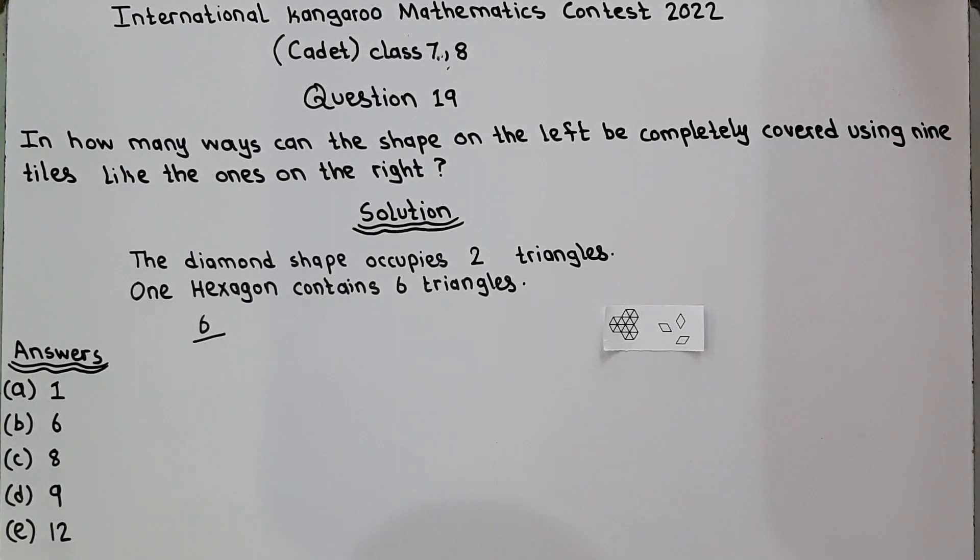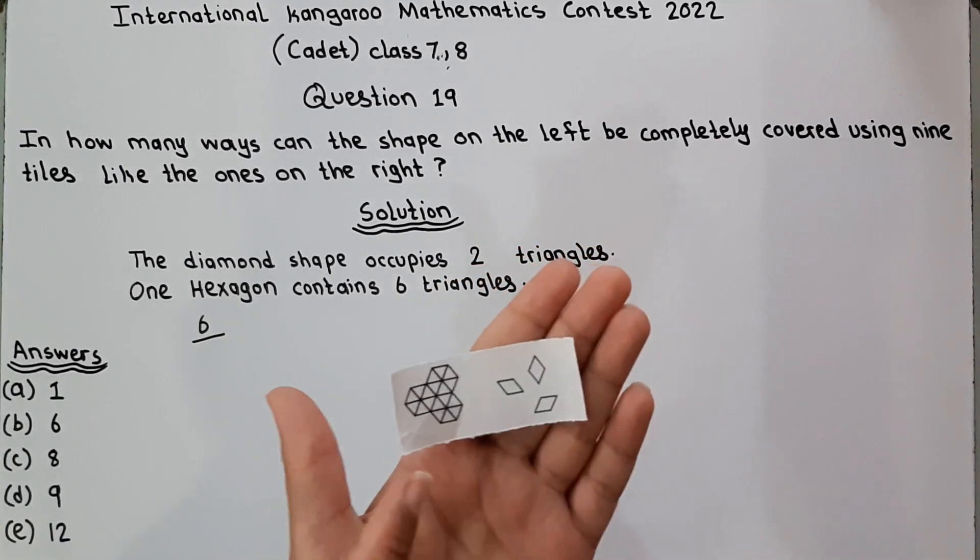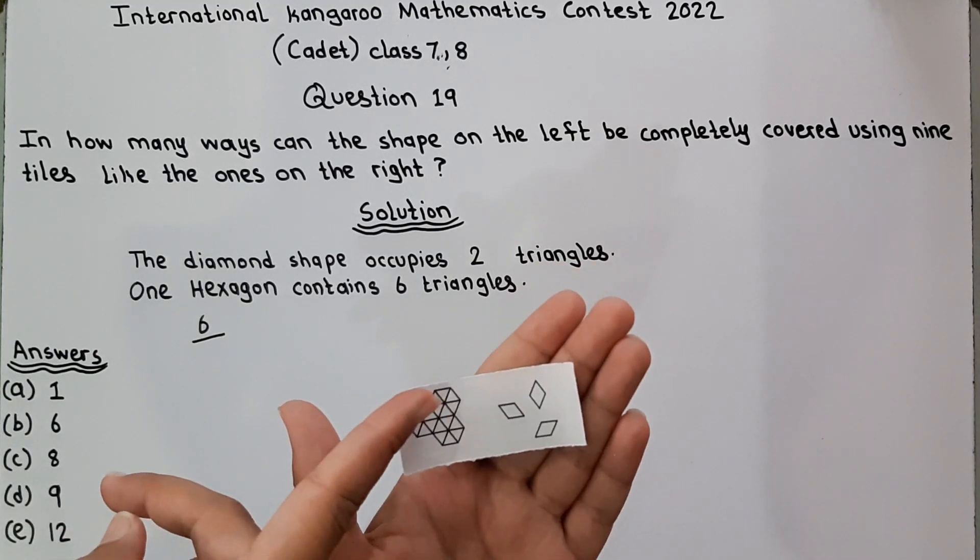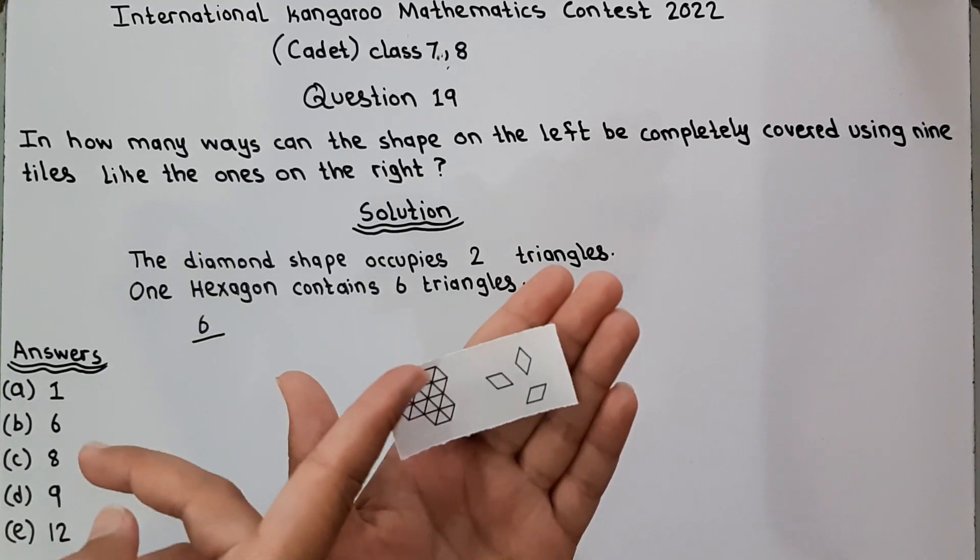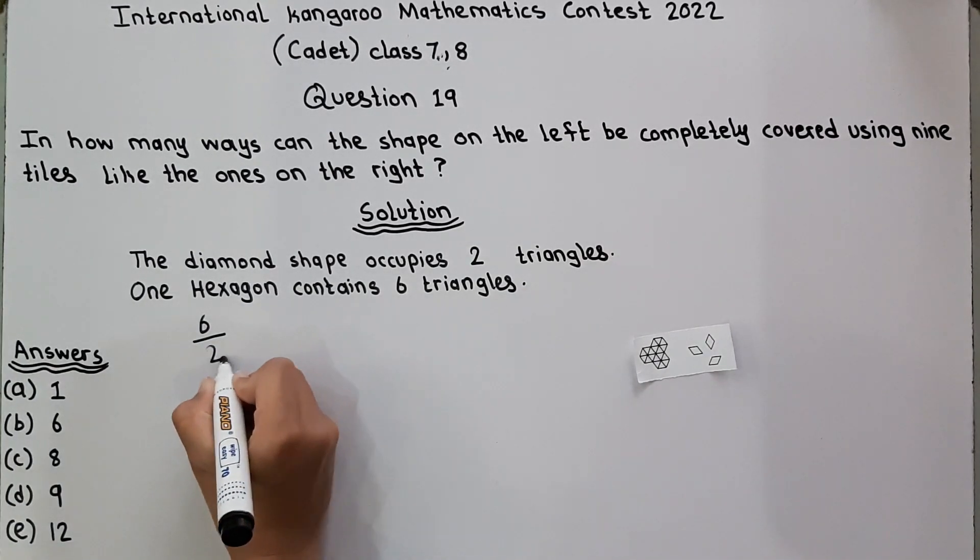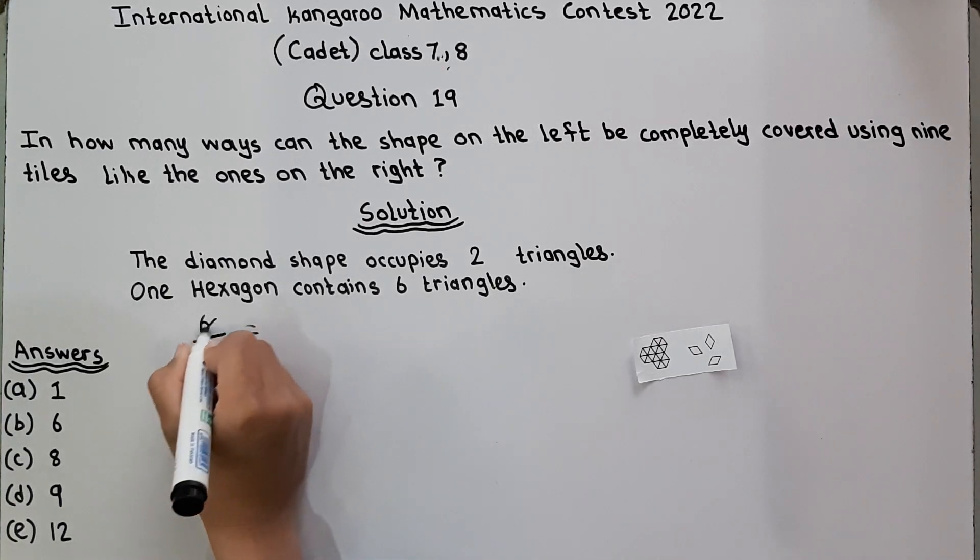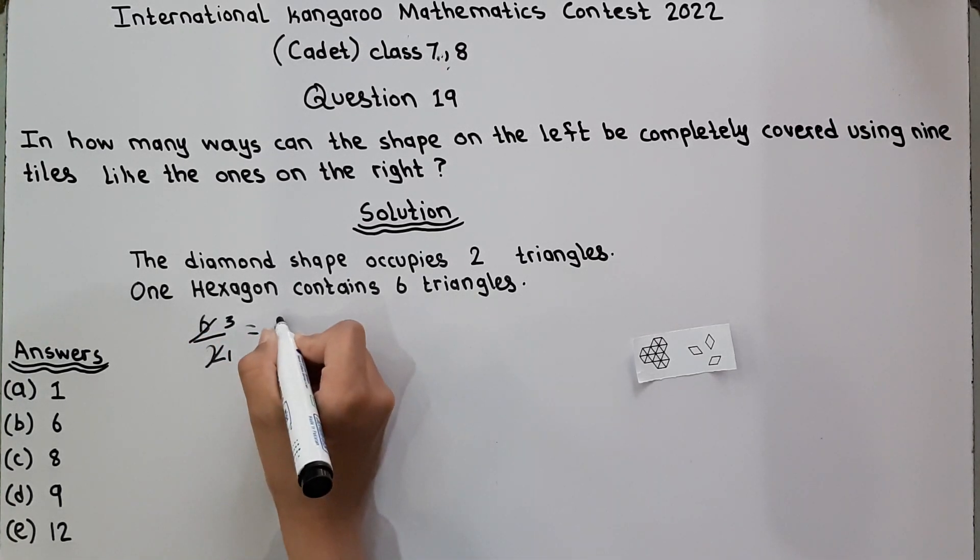Look, this is the diamond shape and this occupies two triangles in one hexagon. So we'll do 6 divided by 2. Two ones are two and two threes are six, which equals 3.